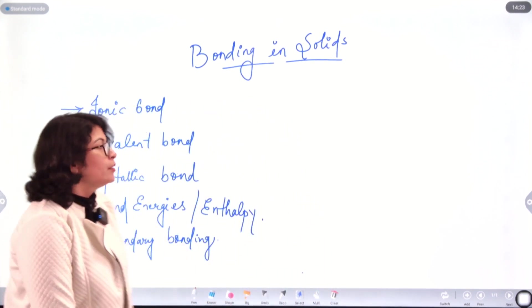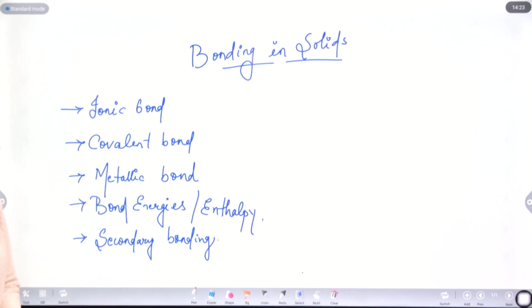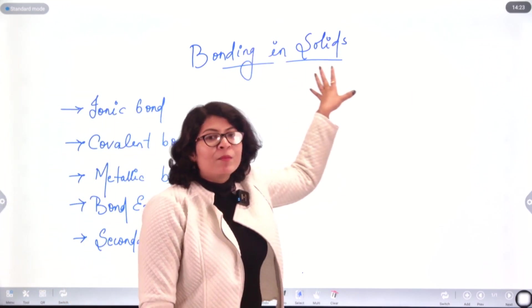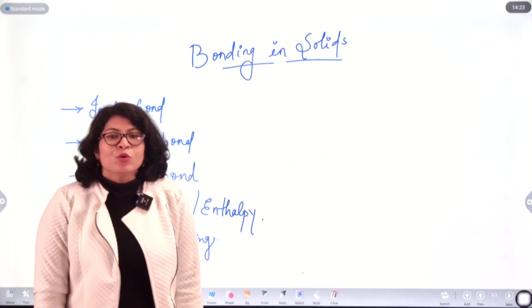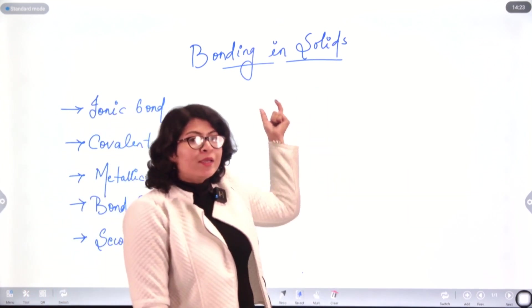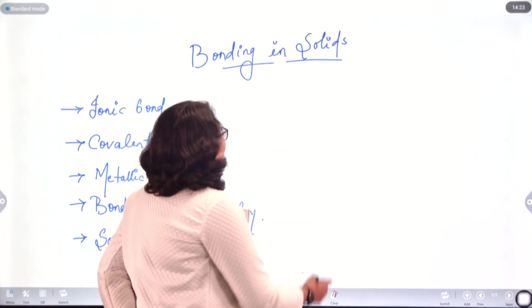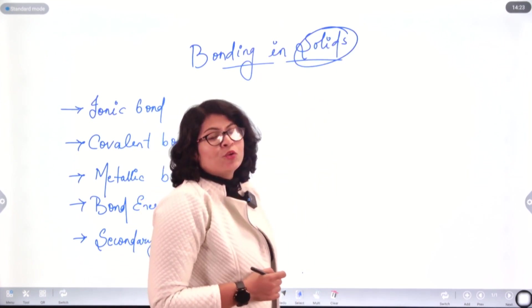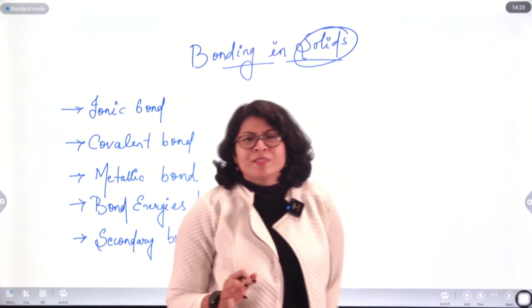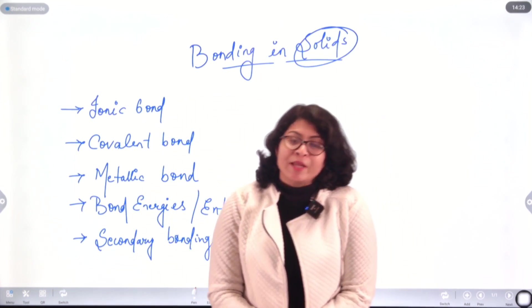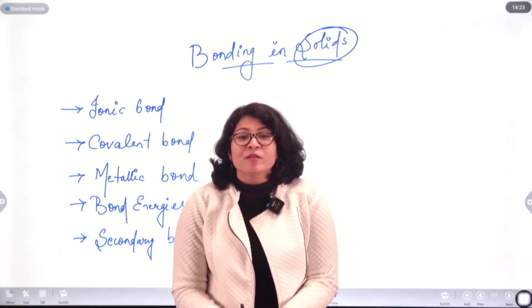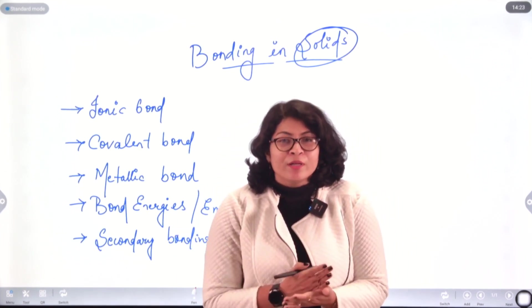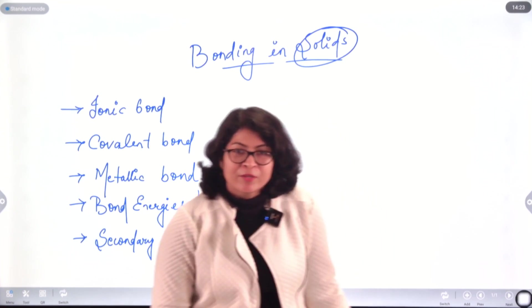So first let's take up Ionic Bond. But before moving to Ionic Bond, let us understand our topic a bit better. So, Bonding in Solids — first of all, why solids? What are solids? In states of matter you might have read that there are three major states of matter: solid, liquid, and gas.